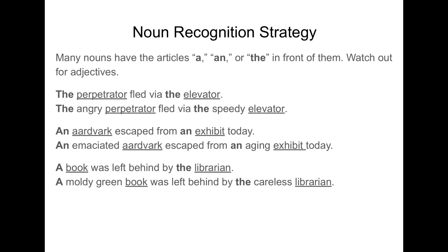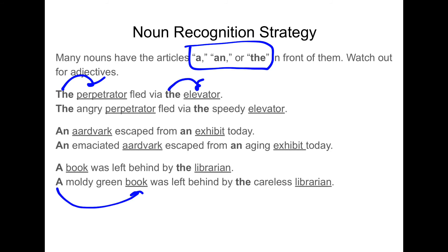Many nouns have the articles a, an, or the in front of them, such as the perpetrator or the elevator. There might be some adjectives thrown in there though, like a moldy green book or the careless librarian. That's a clue that a noun is coming up.